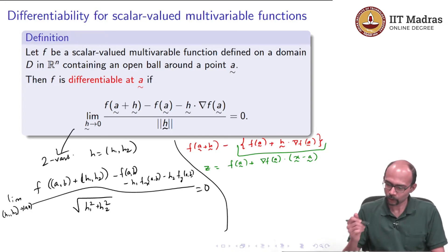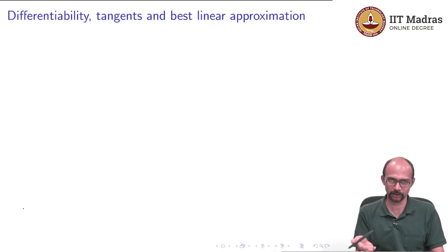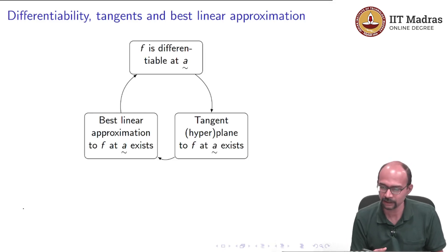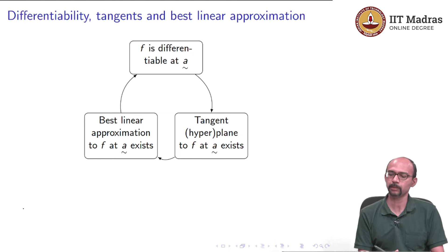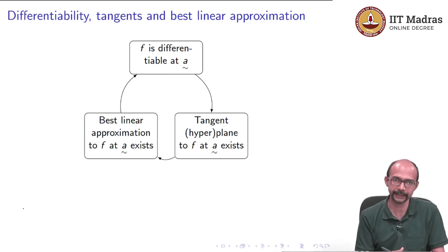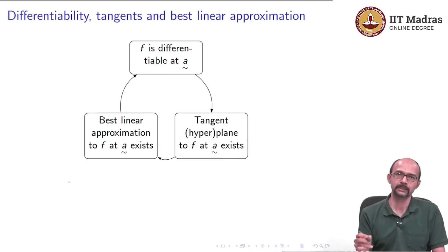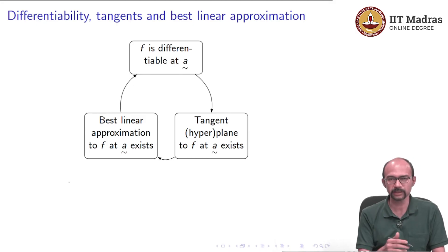This is the definition. Not surprisingly, once f is differentiable we have an immediate connection with the tangent and the best linear approximation, because that is what appears in the expression. So if f is differentiable at ã, that is exactly the same as saying the tangent hyperplane to f at ã exists, which is exactly the same as saying the best linear approximation to f at ã exists. So the picture we had for the one-variable calculus case exactly matches what we have in the multivariable calculus case with this definition.